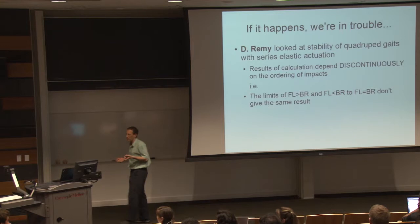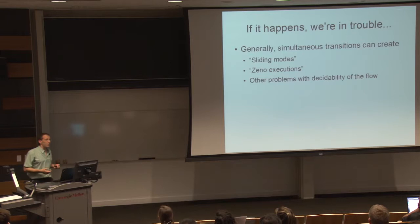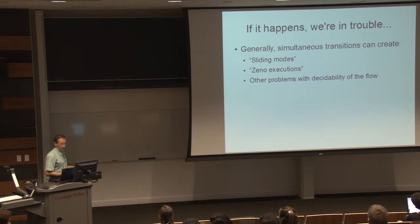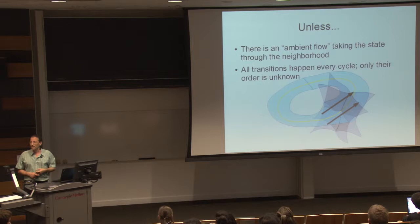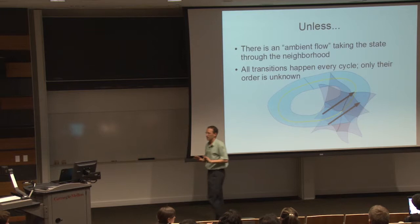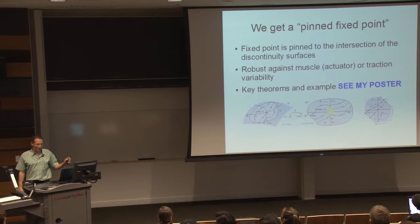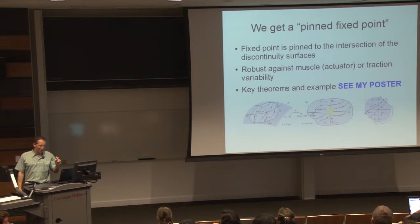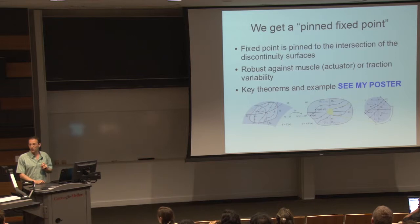Generically, if you have simultaneous transitions in hybrid systems, they create sliding modes, what are called Zeno executions, and other problems that make understanding the flow very difficult. It turns out that doesn't happen in the case that matters for locomotion — there's an ambient flow that takes us right through all these transitions, and all the legs eventually hit the ground every cycle. The short version is that the fixed point has a new kind of stability that is robust against muscle and traction uncertainty, which should be interesting to the locomotion community.